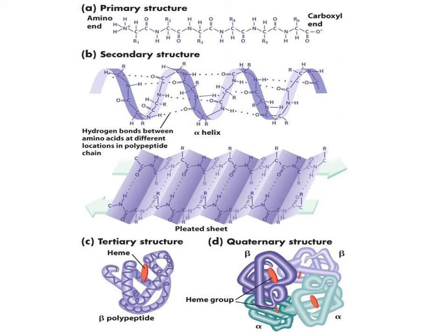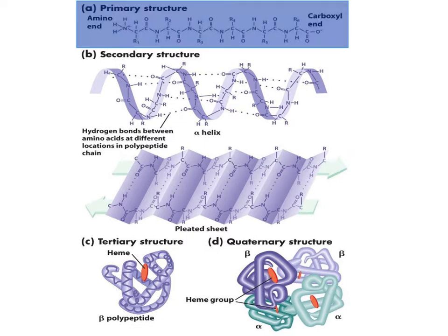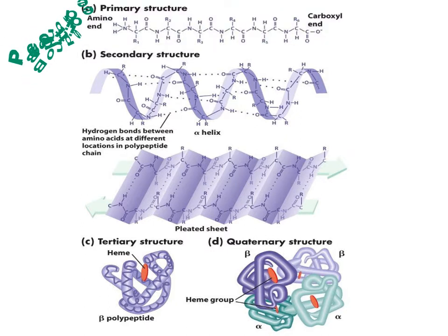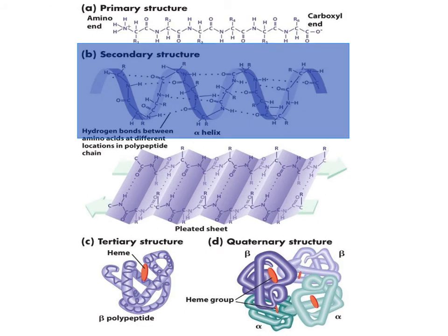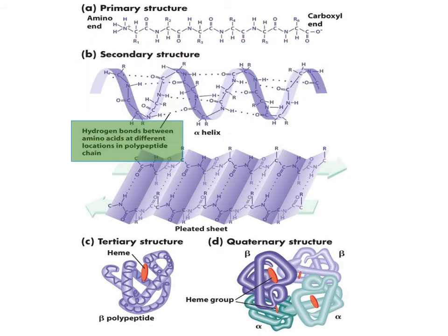For the purpose of this course, you need to know the three levels of protein structure and their bonds. They are the primary protein structure, which is simply a straight chain of amino acids held together by peptide bonds; and the secondary protein structure, which is the alpha helix, held together by hydrogen bonds.